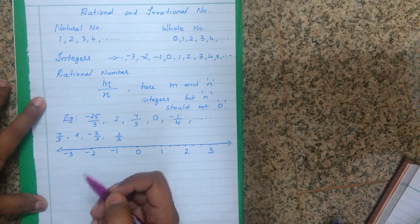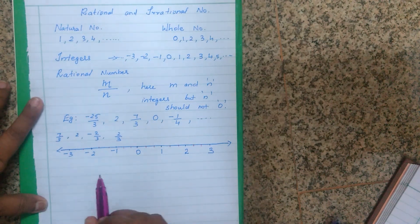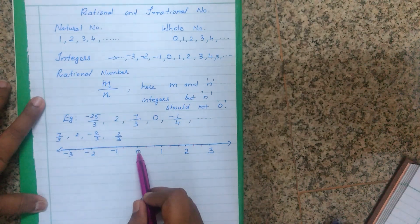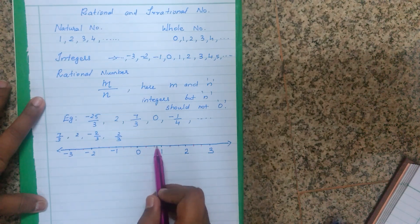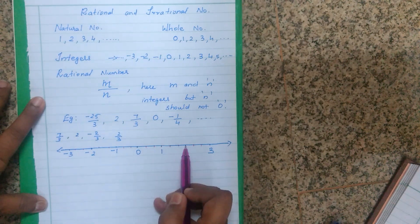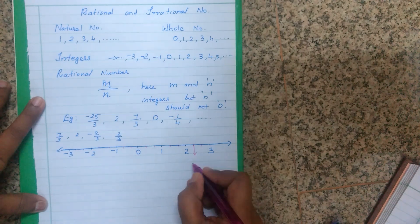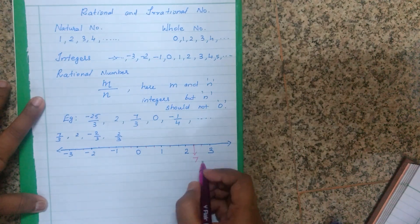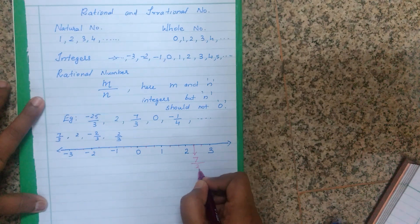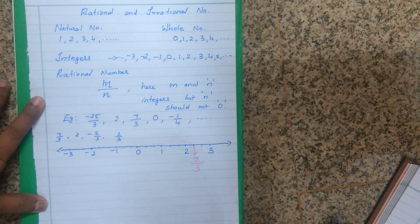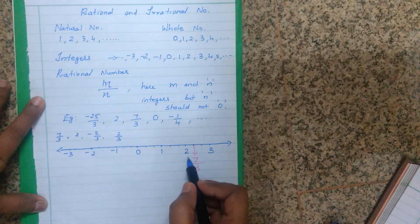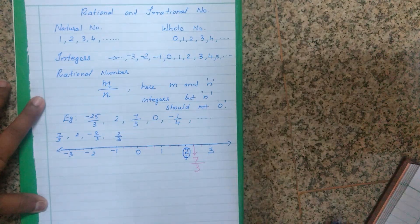The first number is 7 upon 3. Count from 0: 1, 2, 3, 4, 5, 6, 7. The point where 7 lands is the rational number 7 upon 3. Next is the number 2 — it is already there on the number line. Note that 6 upon 3 equals 2, so that point is already marked.